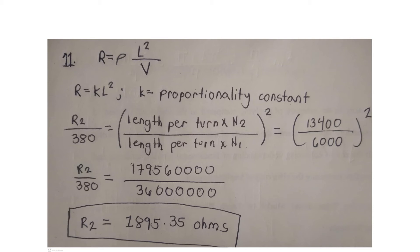R2 over 380 ohms is equal to 13,400 squared over 6,000 squared. The final answer would be 1,895.35 ohms.